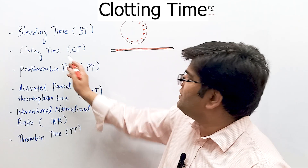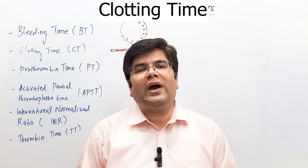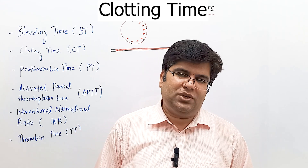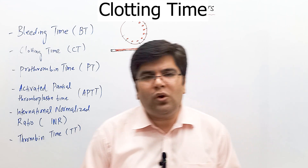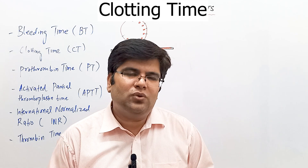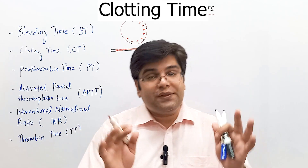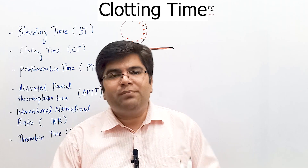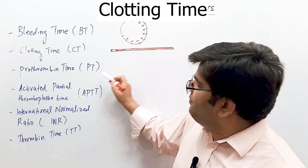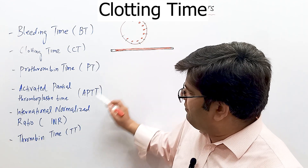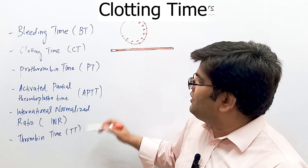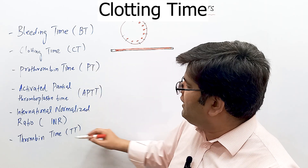Unfortunately, clotting time varies widely depending on the method used to measure it, which is why it is no longer commonly used in clinics. More sophisticated alternate tests — prothrombin time, activated partial thromboplastin time, INR, and TT — are used in its place.